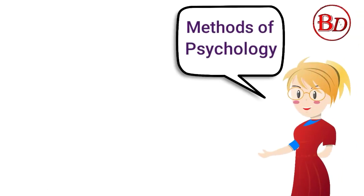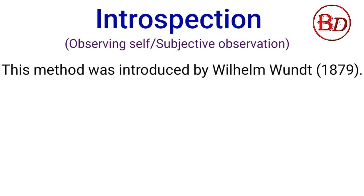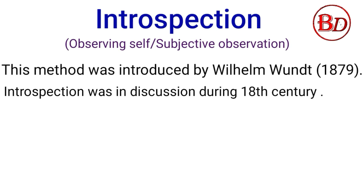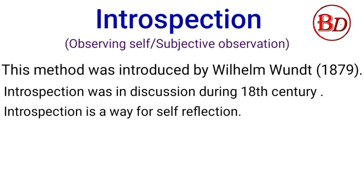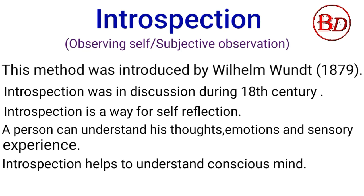Methods of psychology: Introspection — observing self or subjective observation. This method was introduced by William Wundt in 1879. Although some aspects of introspection were in discussion during the 18th century, it was William Wundt who formalized this method. It can be described as a way for self-reflection, by which a person can understand his thoughts, emotions, and sensory experiences, helping to understand the conscious mind. Meditation is an example of introspection.